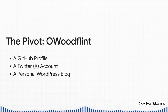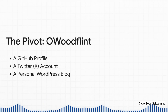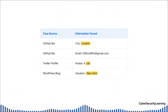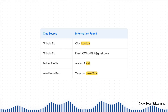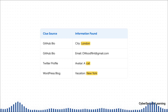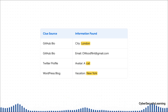A simple Google search for @OWoodflint opens the floodgates. We immediately get hits for a GitHub profile, a Twitter account, and a personal blog. This is such a common mistake — we reuse the same username everywhere for convenience, but we're really creating a perfect trail of digital breadcrumbs. On GitHub, his bio lists his city as London and gives us his personal email. Over on Twitter, his profile picture is a photo of a cat. And on his blog, he posted that he's on vacation in New York right now. From one photo, we now have his username, his email, his home city, his current location, and even his avatar.